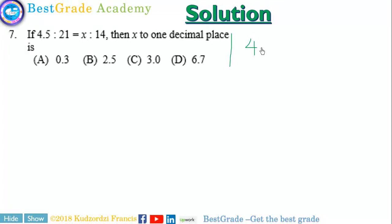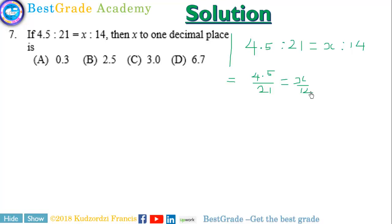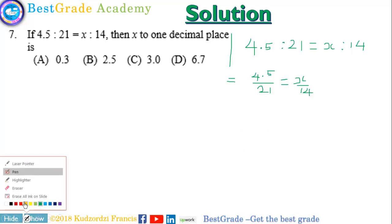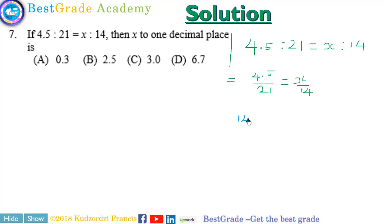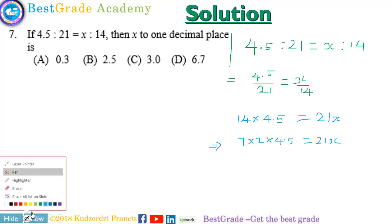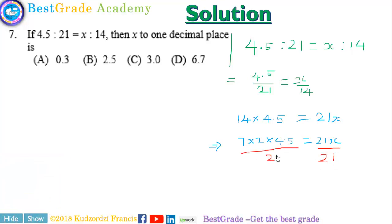We have: if 4.5 is to 21 equals x is to 14, find x to one decimal place. So we have 4.5 over 21 equals x over 14. We cross-multiply to get 14 times 4.5 equals 21x. This is the same as 7 times 2 times 4.5 equals 21x. We then divide both sides by 21.